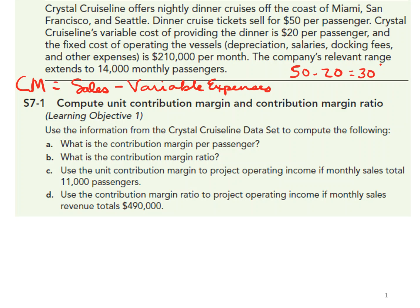Or we can calculate it in total, which would be the number of passengers times the per-passenger contribution margin. The answer to Part A is $30 contribution margin per passenger.